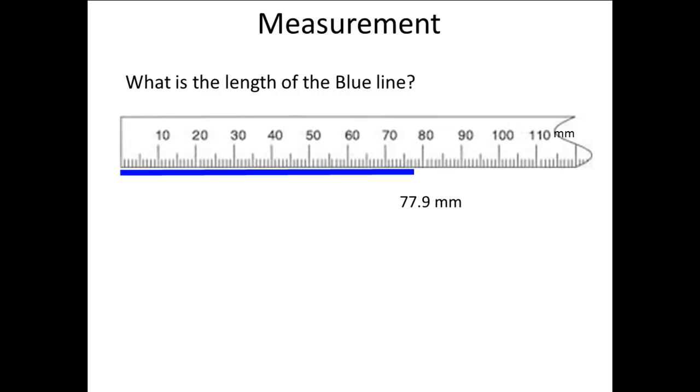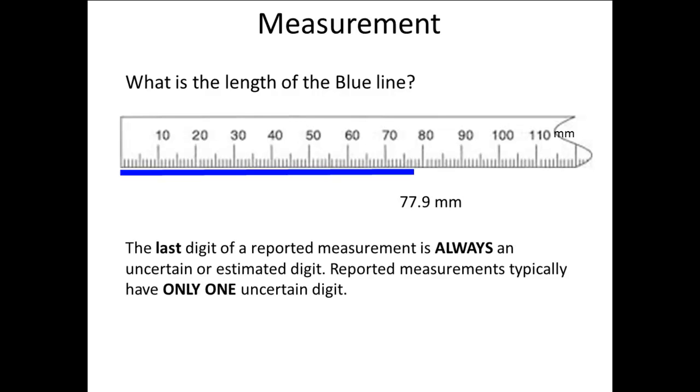What if you thought that the line was right even with the 78 millimeter mark? In that case, you would write 78.0 millimeters. That brings us to a third point about the measurements. The last digit of a reported measurement is always an uncertain or estimated digit. Reported measurements typically have only one uncertain digit.